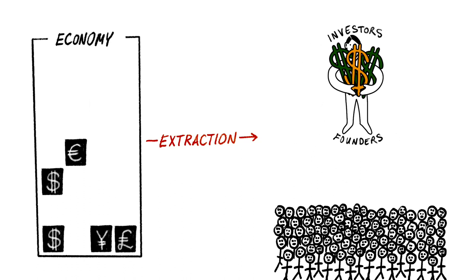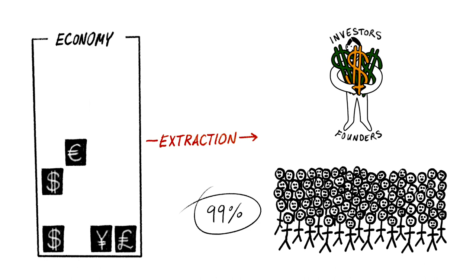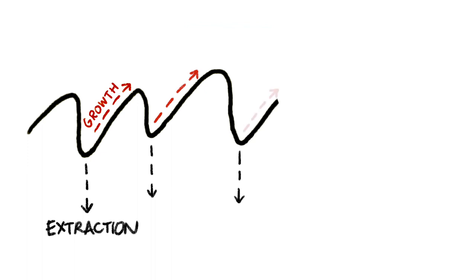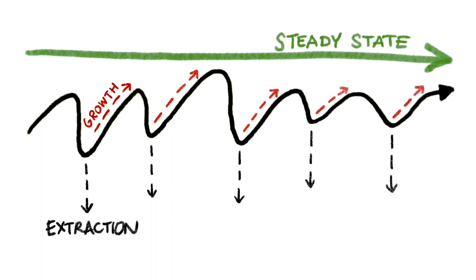I believe that this value extraction creates the 99% and the 1%. If you were to eliminate the extraction, we'd be able to start to flatten our economies without them falling apart. But the problem is, there's so much extraction happening from our economies that the economy needs to continue growing just to maintain a steady state. This is the fundamental problem.